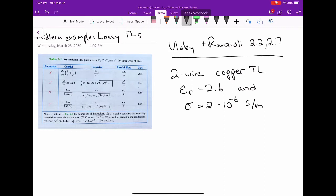The wires are separated by 3 centimeters and the wire radius is 1 millimeter. We're asked to calculate the line parameters, the per unit length line parameters, so we need to know R', L', G', and C'.